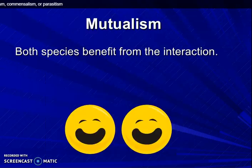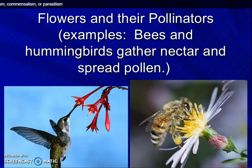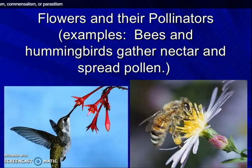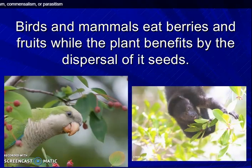The next topic is mutualism. In this, both species benefit from the interaction. Flowers and their pollinators — for example, bees and hummingbirds — gather nectar and spread pollen grains. In this way, both the plants and pollinators get benefited.